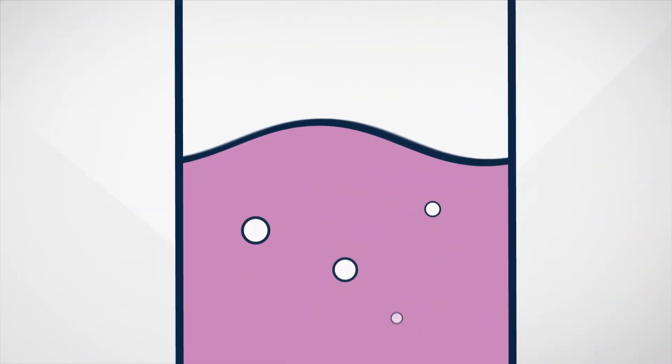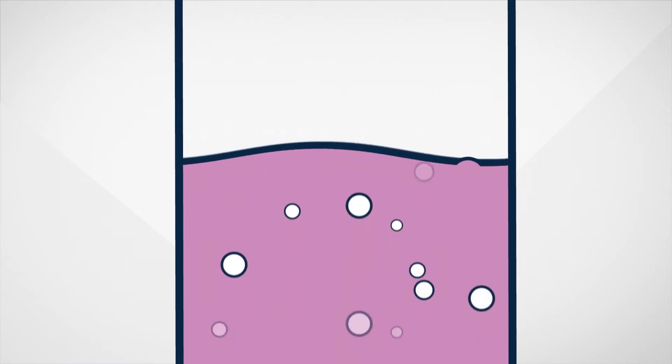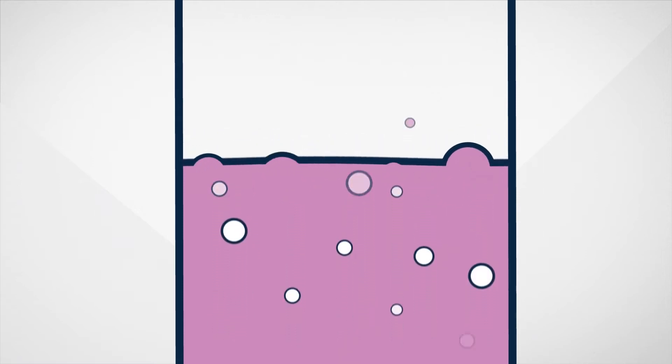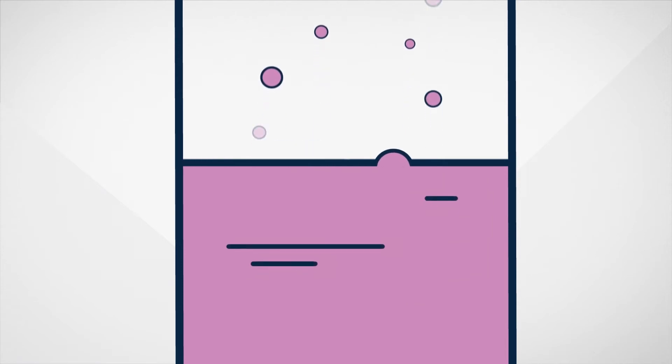Reforming uses heat, pressure and a catalyst to upgrade the naphtha gas produced during distillation and cracking into new compounds for blending.